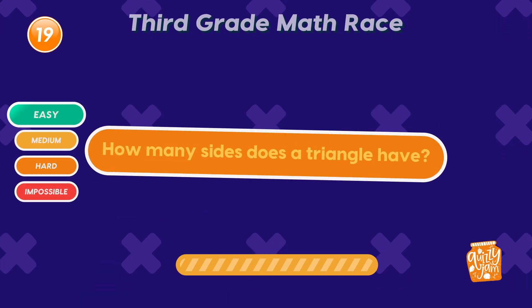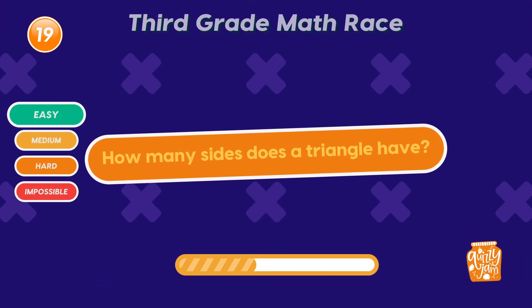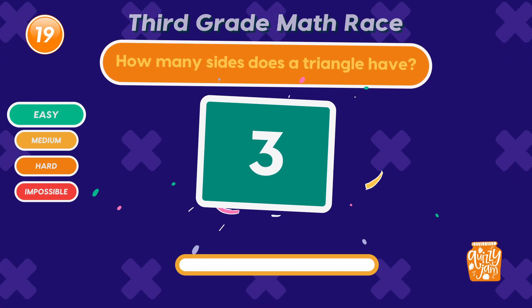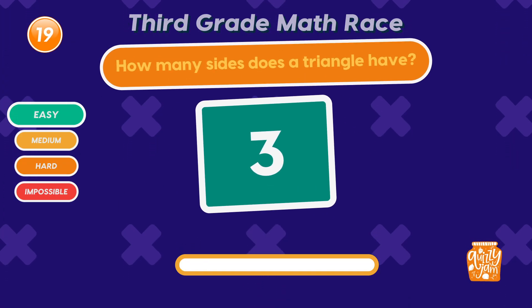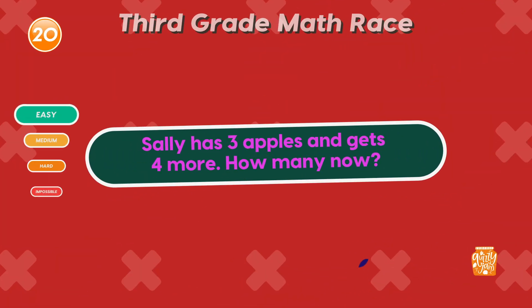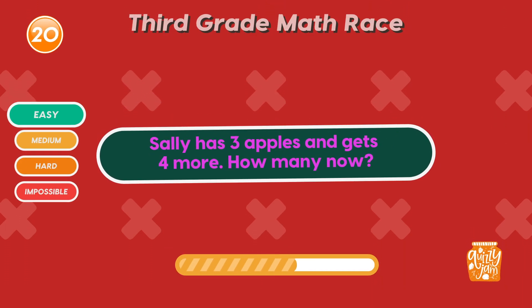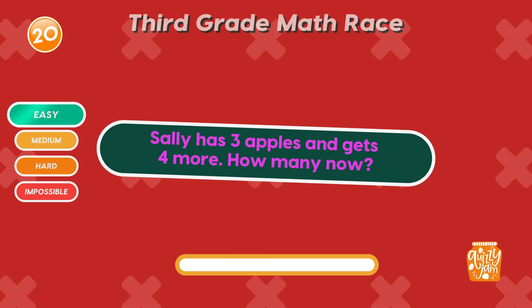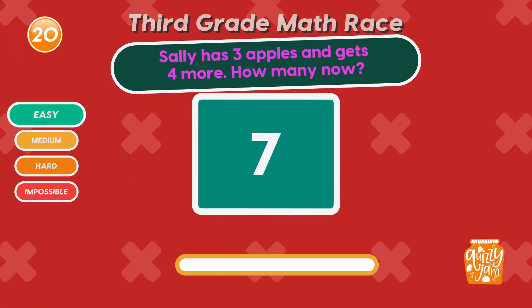How many sides does a triangle have? 3! You're shaping up well! Sally has 3 apples and gets 4 more. How many now? 7! If you aced that, share this quiz with a friend!